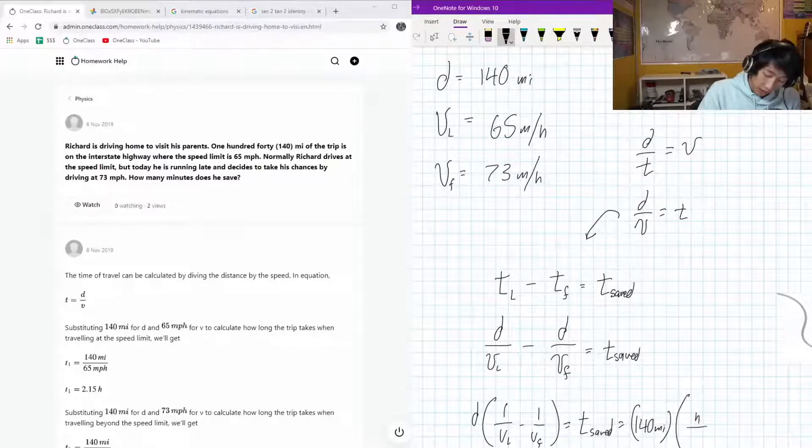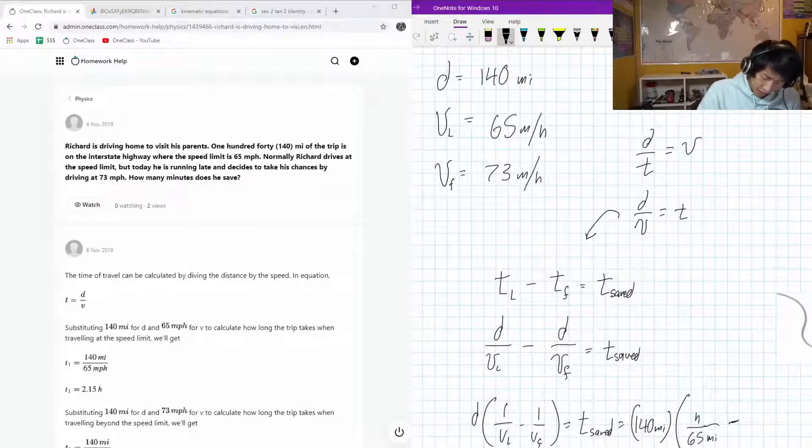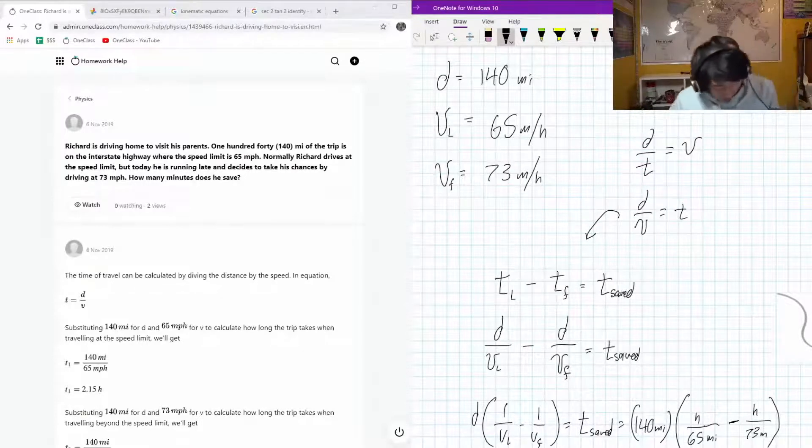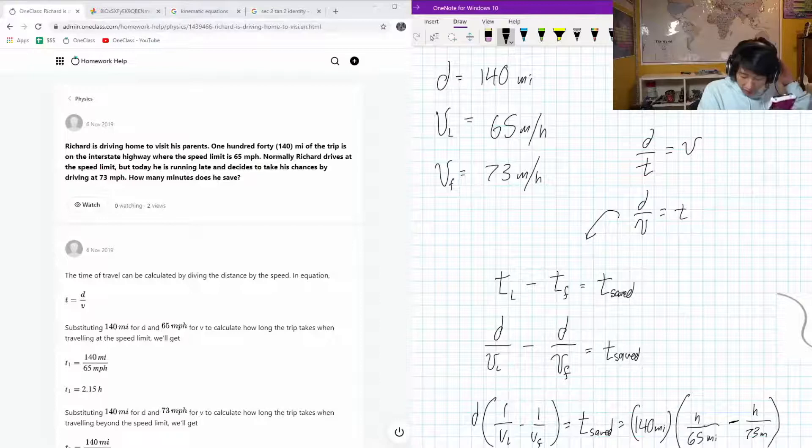Let's calculate this. So our distance is 140 miles, and here we're going to have hours per mile. Our slow is going to be 65, and our fast is going to be hours per 73 miles.